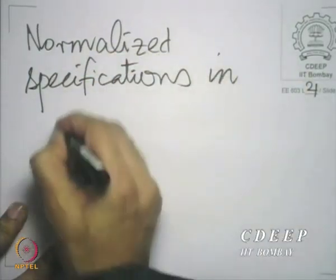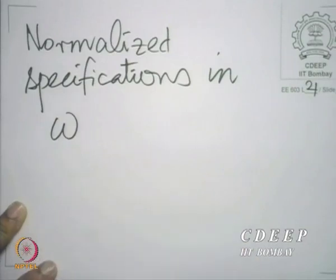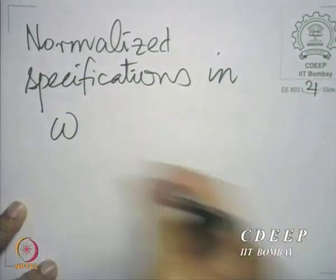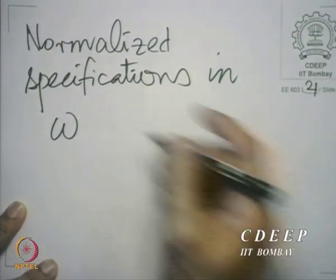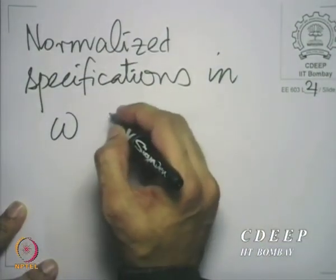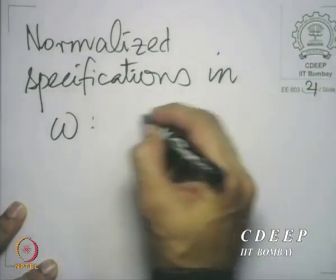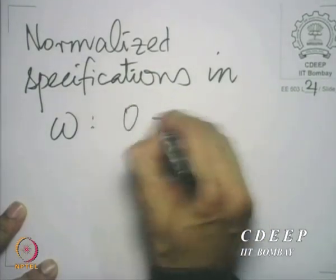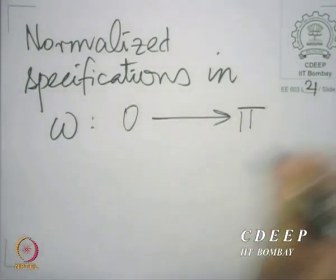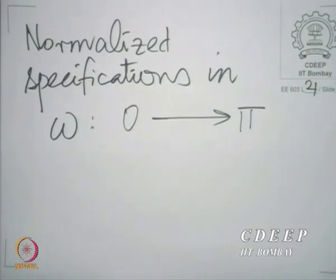The normalized specifications are in the normalized angular frequency, which would be between 0 and pi, because we are going to design a real filter, and therefore what we have between 0 and pi is also going to be mirrored between minus pi and 0.